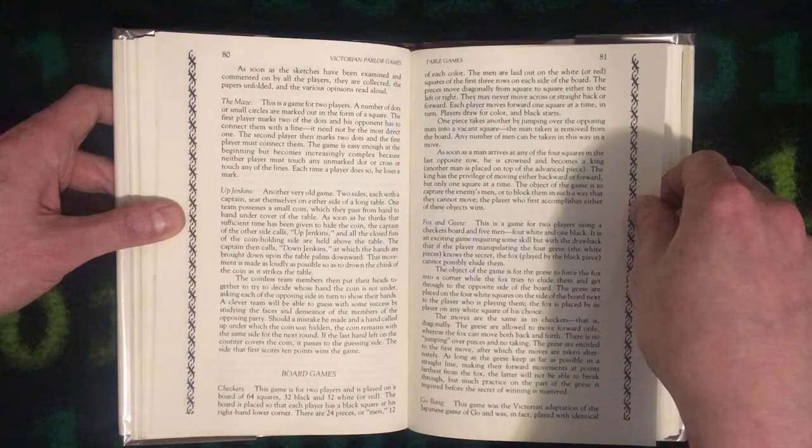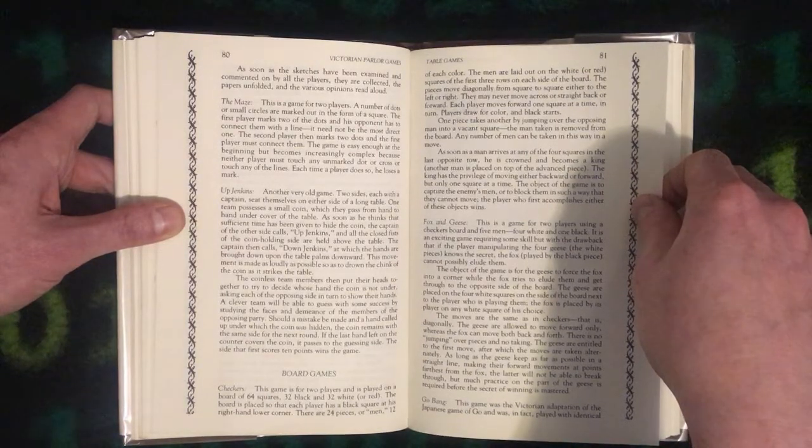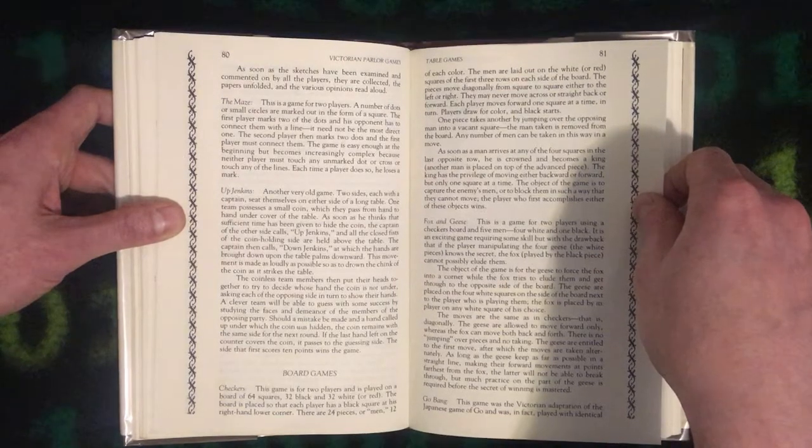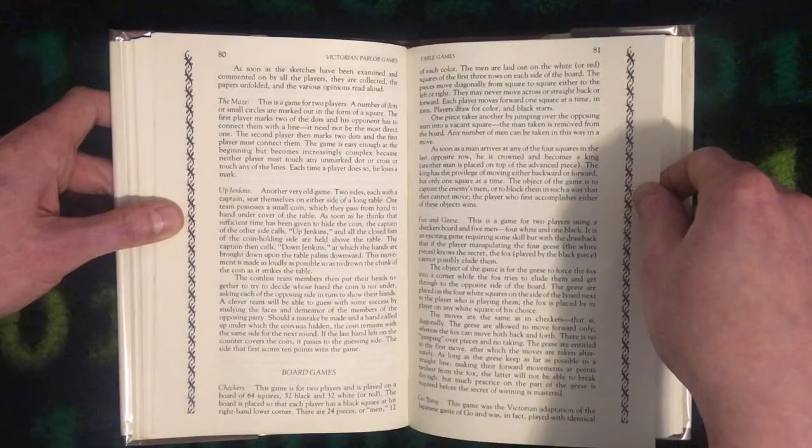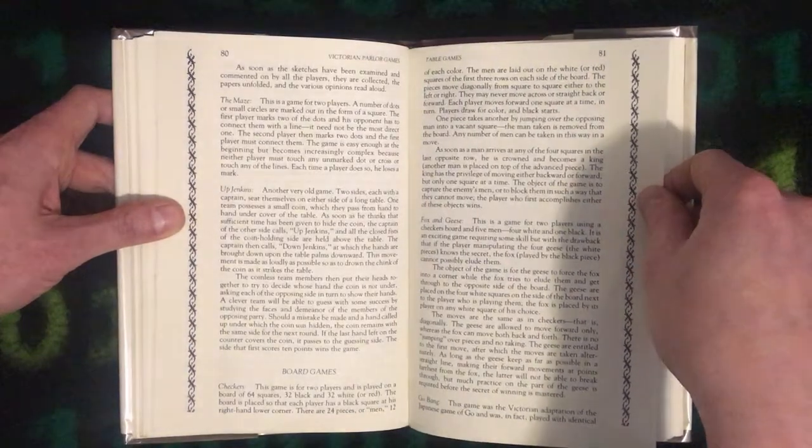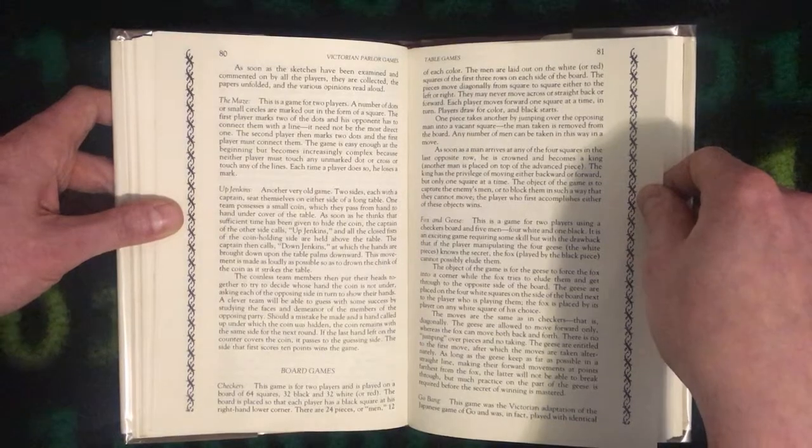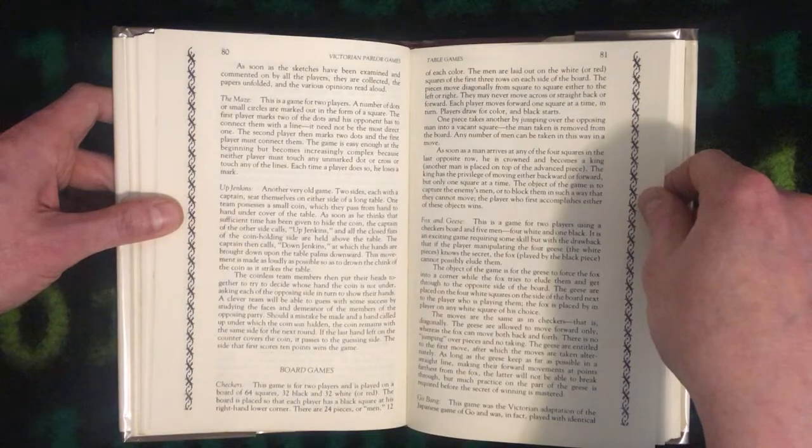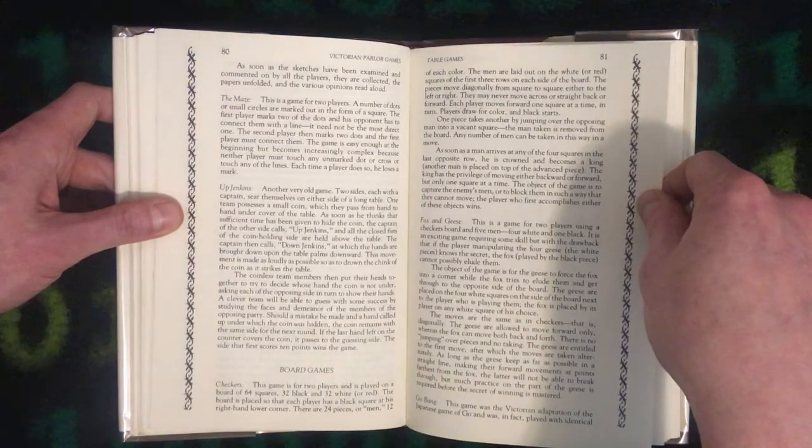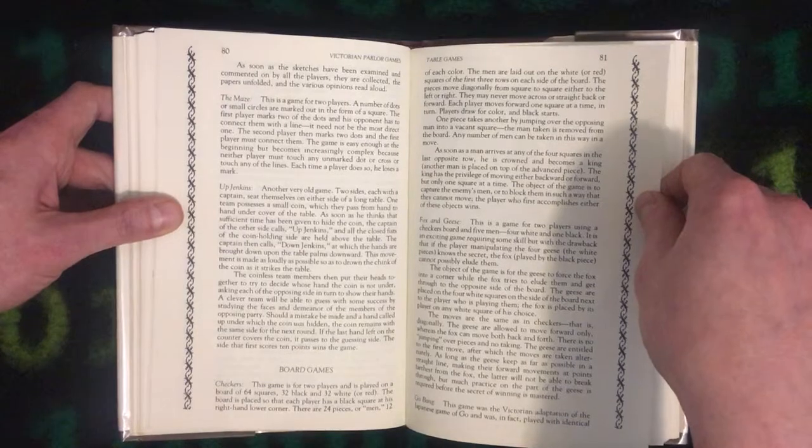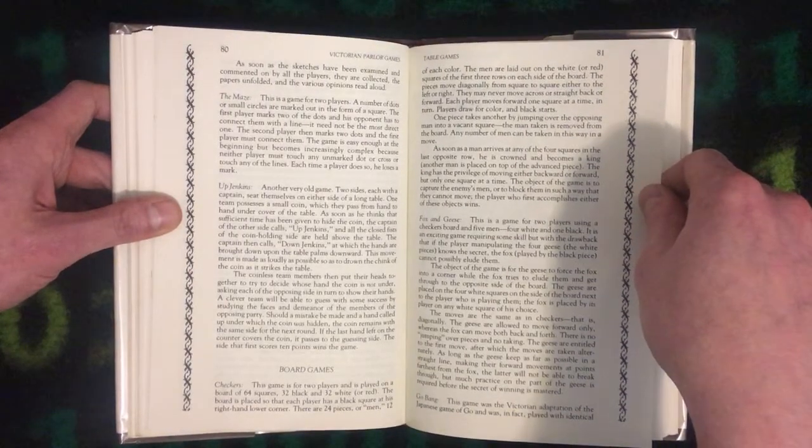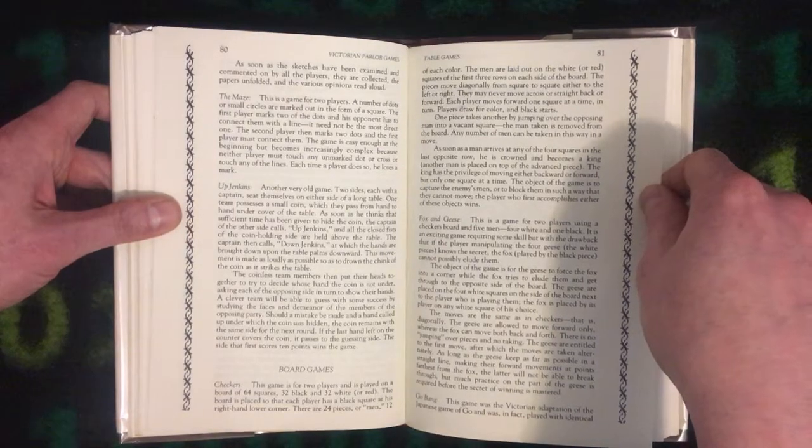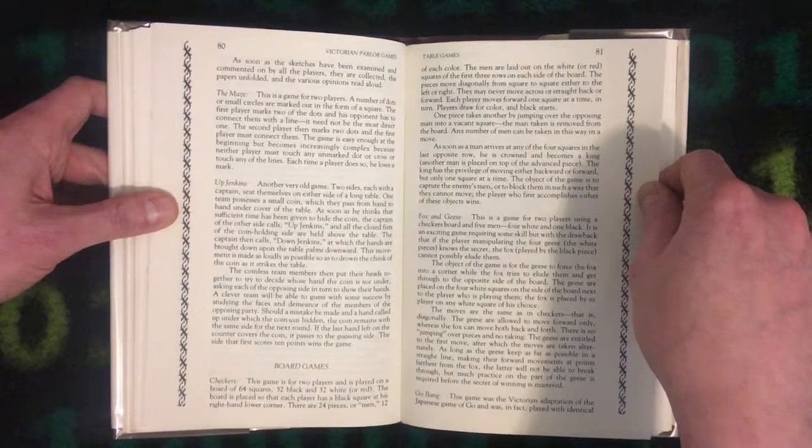The coinless team members then put their heads together to try to decode whose hand the coin is not under, asking each of the opposing side in turn to show their hands. A clever team will be able to guess with some success by studying the faces and demeanor of the members of the opposing party. Should a mistake be made and a hand called up under which the coin was hidden, the coin remains with the same side for the next round. If the last hand left on the counter covers the coin, it passes to the guessing side. The side that first scores ten points wins the game.